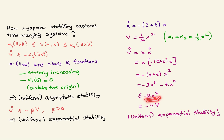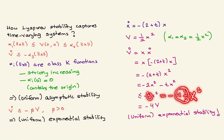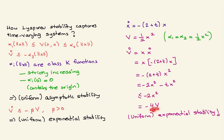By dropping the time dependence, we get V-dot ≤ -x². From this, the origin is uniformly asymptotically stable. But we can do more: rewriting gives V-dot ≤ -4 * (x²/2) = -4V, which gives uniform exponential stability for this system.